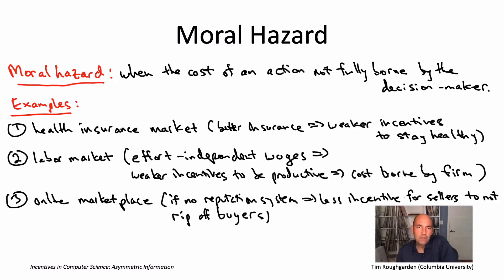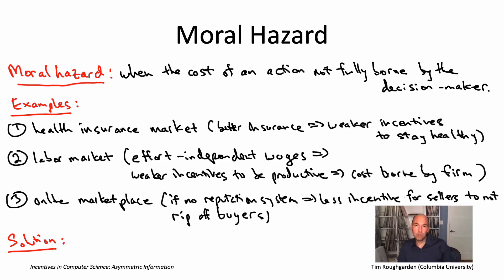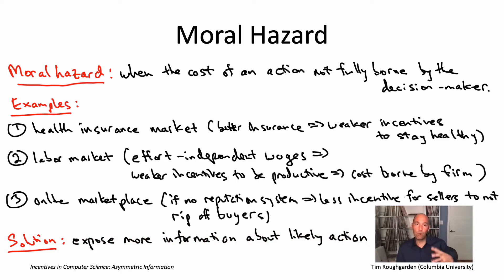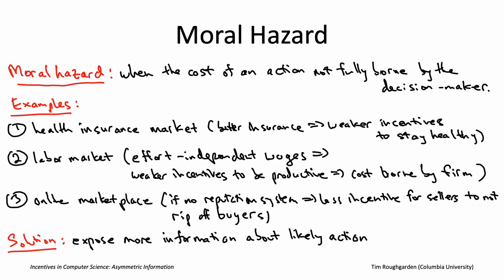As with adverse selection, if the issue is asymmetric information, the obvious approach to make it better is to try to reduce the asymmetry in information. In this case, it's about an action — someone taking an action which is not observed. So you want to expose as much information as possible about what that action is likely to be, for example, what action the same individual took in the past in similar contexts. And that is exactly the primary purpose of a reputation system in a platform like Amazon or eBay: you're exposing information about what a seller has done in the past, which reduces the amount of asymmetric information about what the seller is likely to do, and therefore gives us a safer and more efficient market.